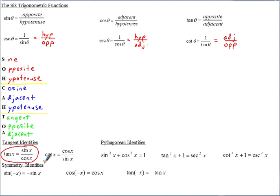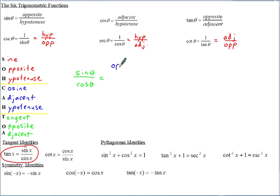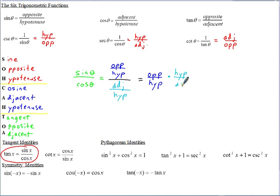You can see why that works because tangent is opposite over adjacent. If you take sine over cosine — sine theta is opposite over hypotenuse, cosine is adjacent over hypotenuse — dividing those fractions means multiplying by the reciprocal, so the hypotenuse cancels out, leaving you with opposite over adjacent, which is tangent. So sine over cosine equals tangent.